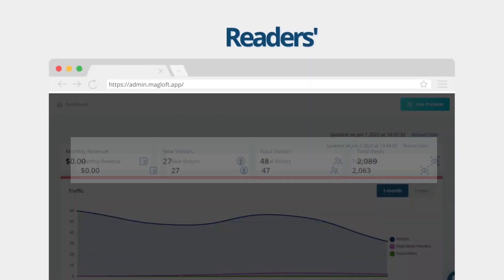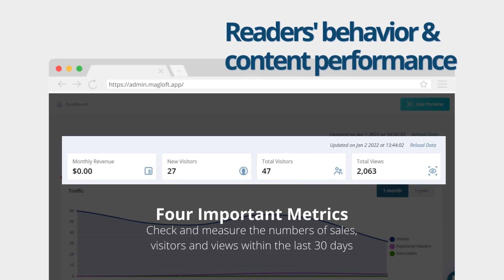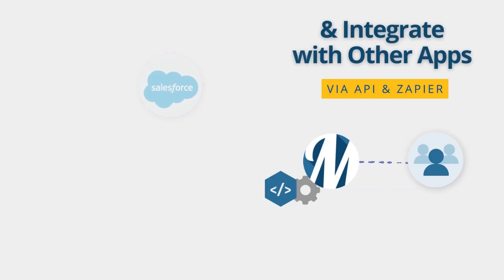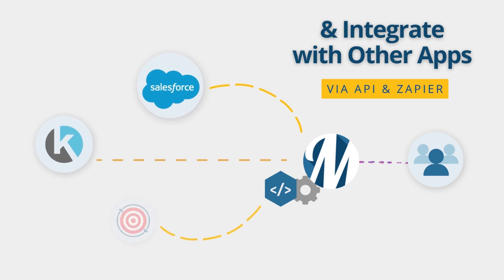Learn about the performance of your content and your readers' behavior using analytics directly on your admin page dashboard. In addition, the universal app can also be integrated and connected with other apps using our API or Zapier.